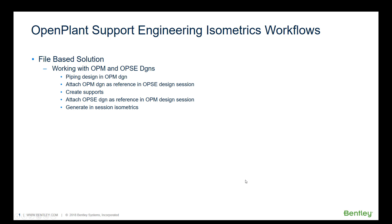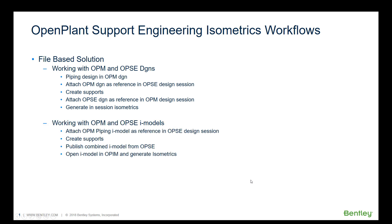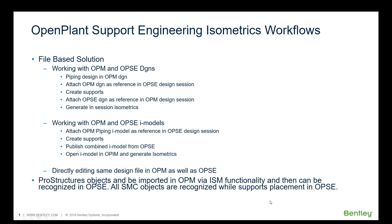You can also use iModels — these are the old i.dgn files. This was one of the preferred workflows in the earlier Vieta releases, where you could attach OPM piping iModels (not the design DGN itself, but the iModels) as a reference in an OpenPlant Support Engineering design session and create supports there. Once done, you could publish a combined iModel from the OpenPlant Support Engineering interface and, as needed, open that iModel file in OpenPlant Isometric Manager, select the design pipeline or ISO sheets, and generate isometrics. You could also do this in Connect Edition, but with in-session isometric generation now available, the preferred workflow is to create in-session isometrics.